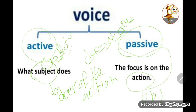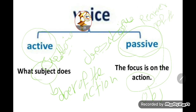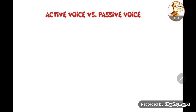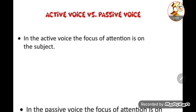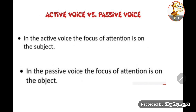The focus is on the object because we take the object from the active sentence and place it as the subject of the passive sentence. The subject is not important — I don't care about it. The object is the receiver of the action, just as the subject is the doer. An active voice focuses attention on the subject, while passive voice focuses attention on the object.